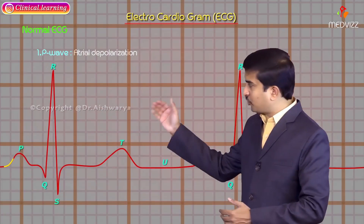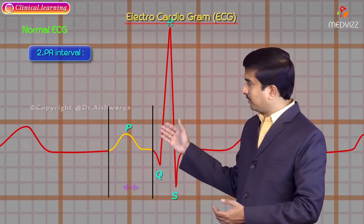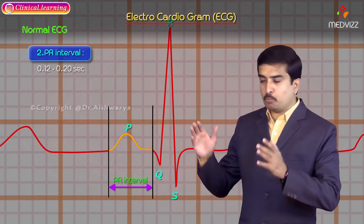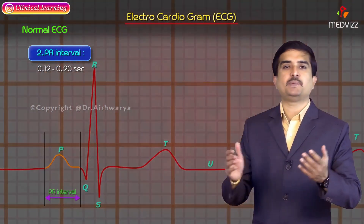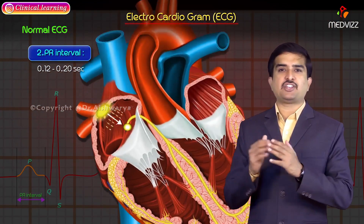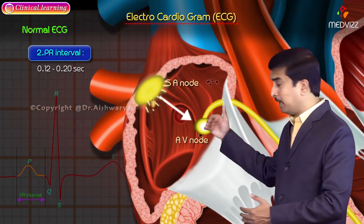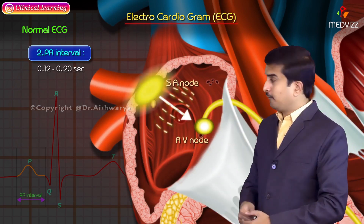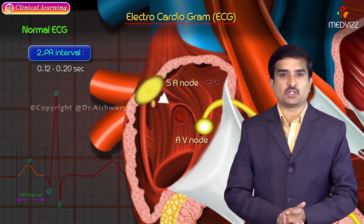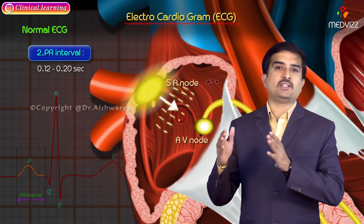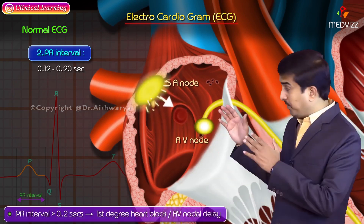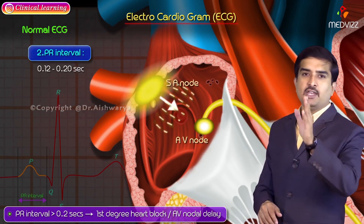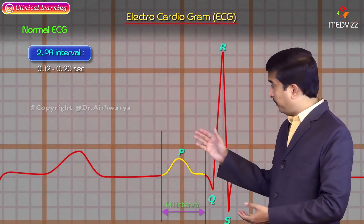Now let us talk about normal ECG waves. The P wave represents atrial depolarization, followed by the PR interval. The normal PR interval is 0.12 to 0.20 seconds — it is the time taken by the action potential to travel from the SA node to the final part of the AV node. If the PR interval is greater than 0.20 seconds, it is called first degree heart block or AV nodal delay.